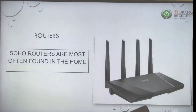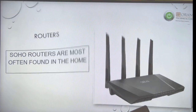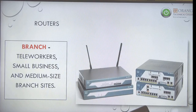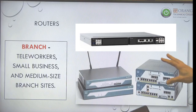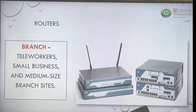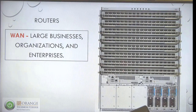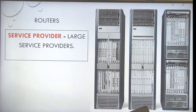At home, SOHO routers are the most common. As we leave the home and get into small business, you'll see routers from Cisco, HP, Prinnet, Dell, and many other companies for branch sites. Then you get into WANs — serious, very large organizations with routers that are probably half a million dollars each. Then service providers like CenturyLink, Brighthouse, AT&T, and Verizon use routers that are probably a million dollars each and are incredibly powerful.